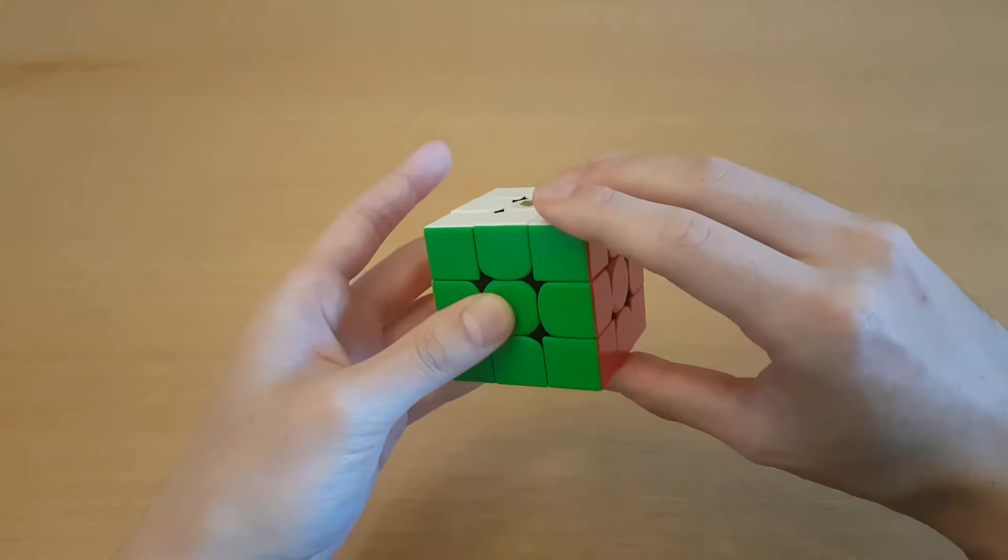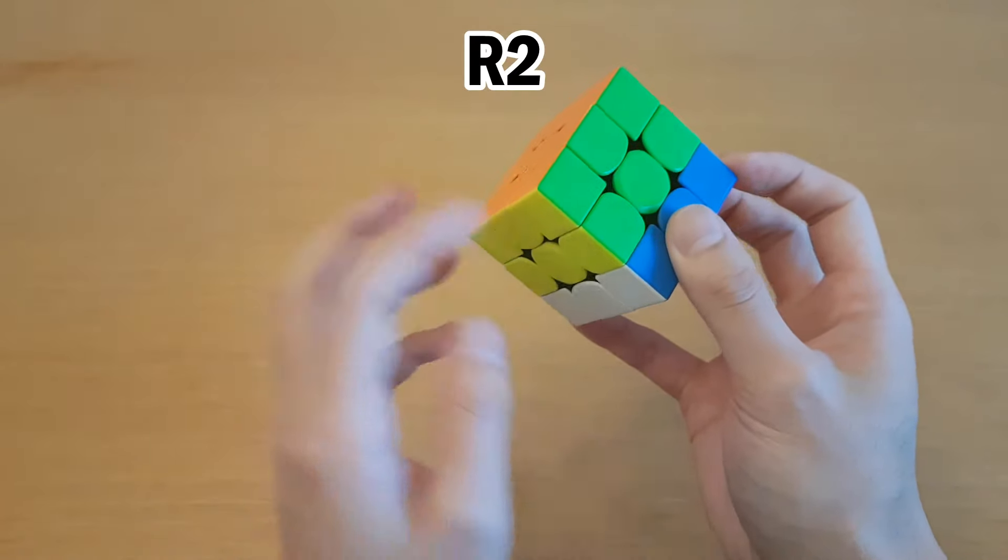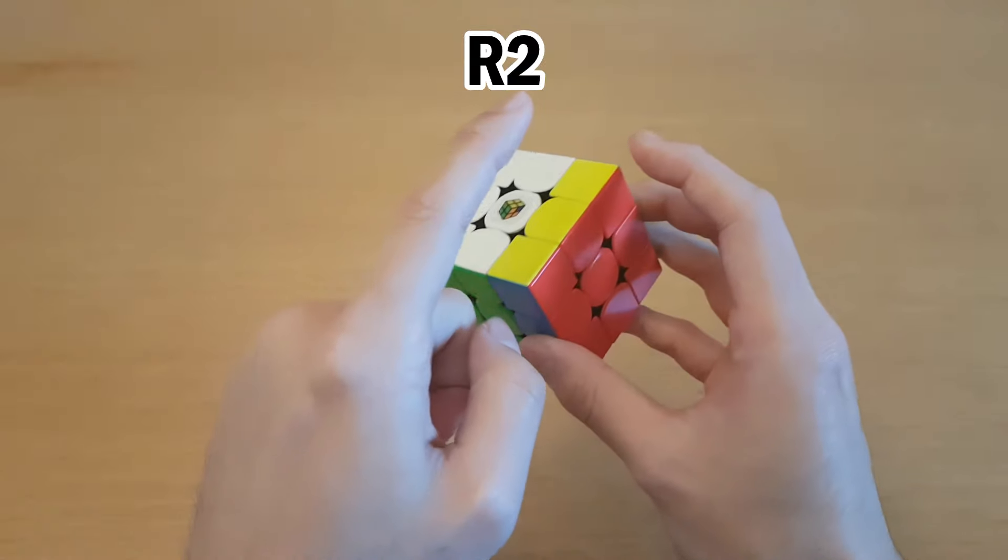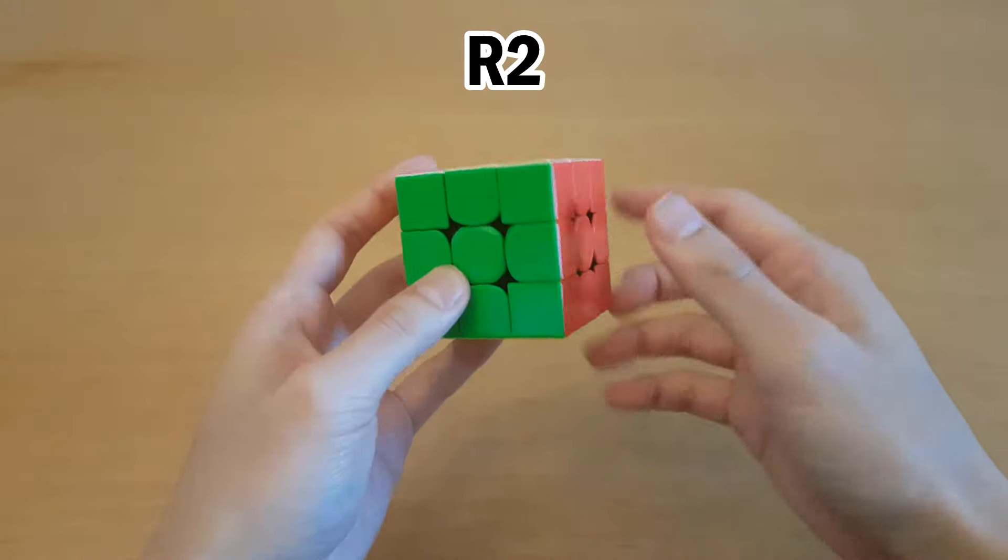Alright hopefully you've tried it, or if you just want to see what I did, then here it is. What you can do is R2, and then that unsolves this. Here I'm going to consider the first layer as solved, so anything yellow, and I'm going to try and solve this back to the bottom in a different way.